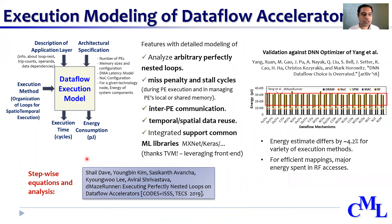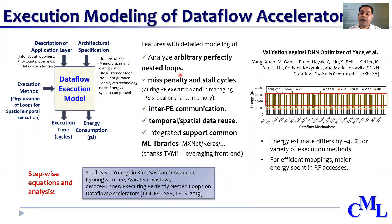For optimizing executions, the MazeRunner framework employs an analytical model which considers different factors like reuse of data and stall cycles when the communication latency or latency for accessing data from memory is higher. Such an analytical model allows quick exploration for optimization and can achieve near-real execution metrics. For example, we validated our execution model with a recent optimizer for neural networks and found that the obtained PE utilization and energy consumption match closely. More details about the execution modeling and the stepwise equations are available in our previous paper.